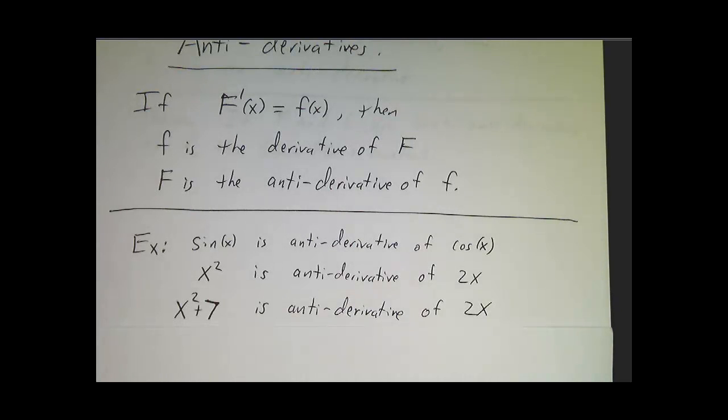But the derivative of x squared plus 7 is also 2x. So x squared plus 7 is also an antiderivative of 2x. Here we had a situation where I gave you f and there were two different possibilities for F. In fact, there are more possibilities.